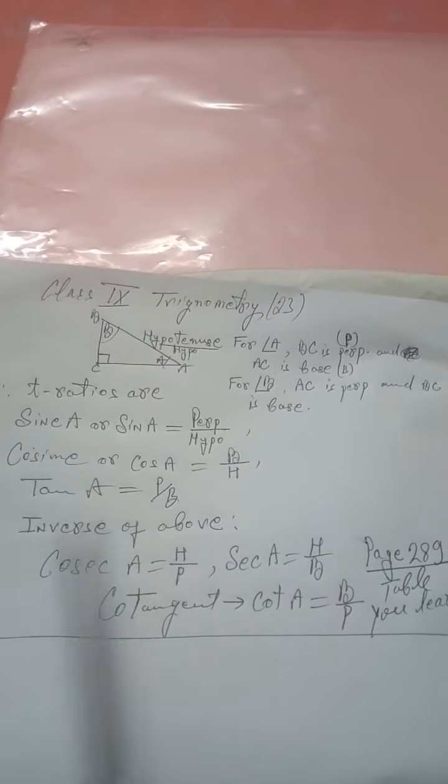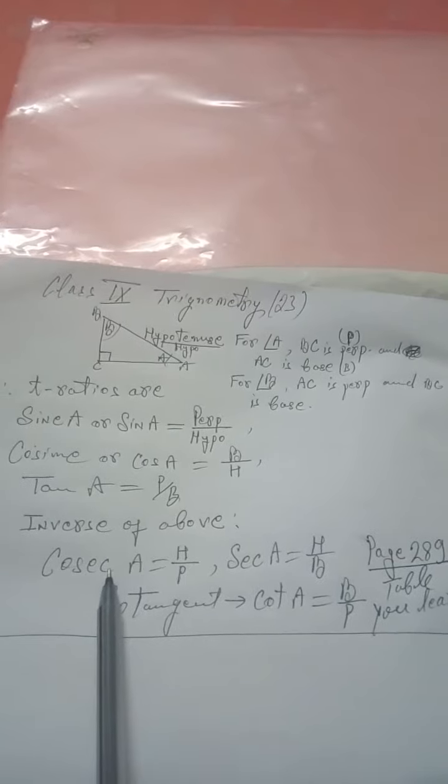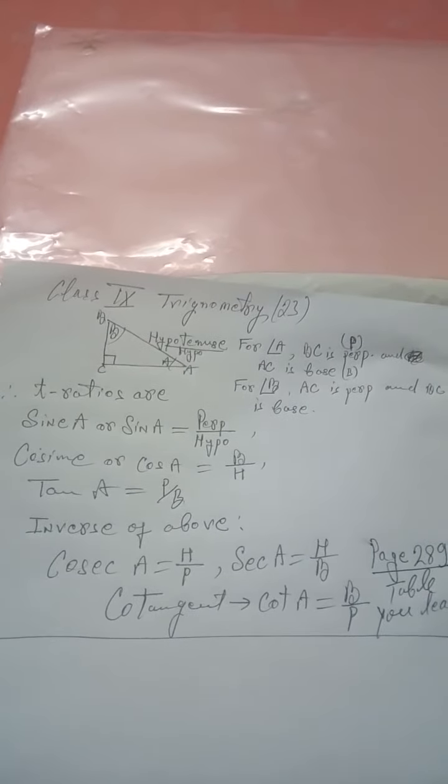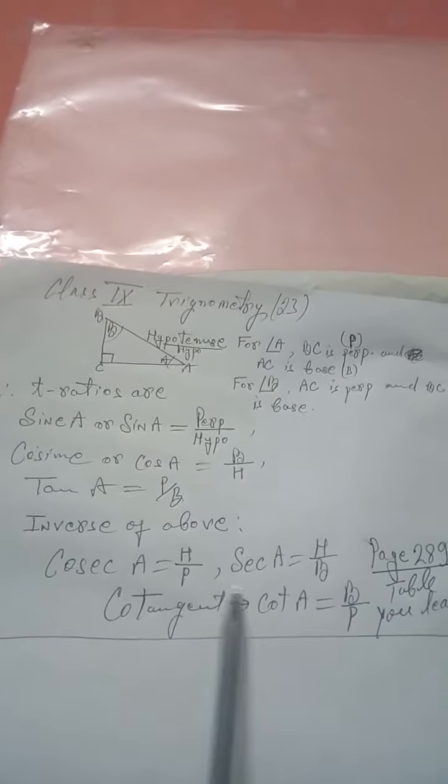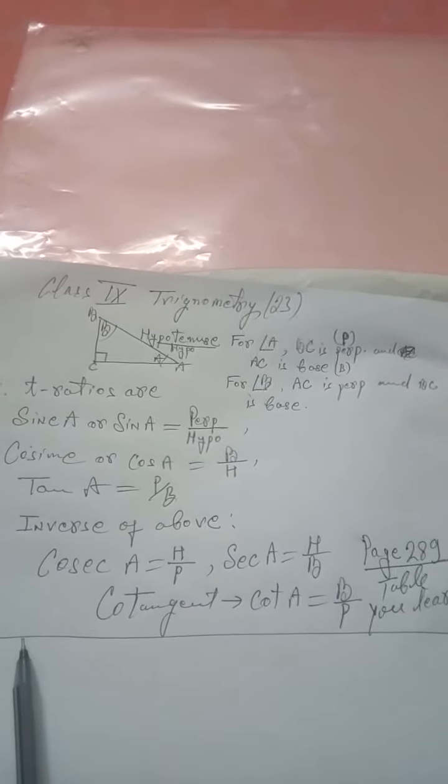There are inverse of the above ratios. Cosec, that is inverse of sine. Sec, inverse of cos. And cot, inverse of tan.